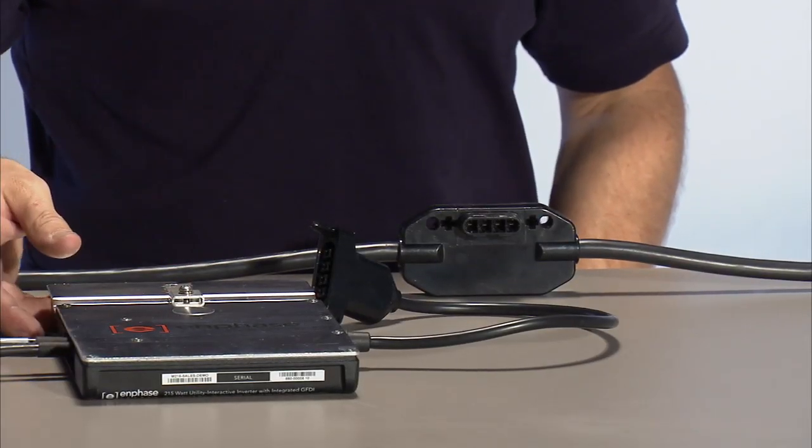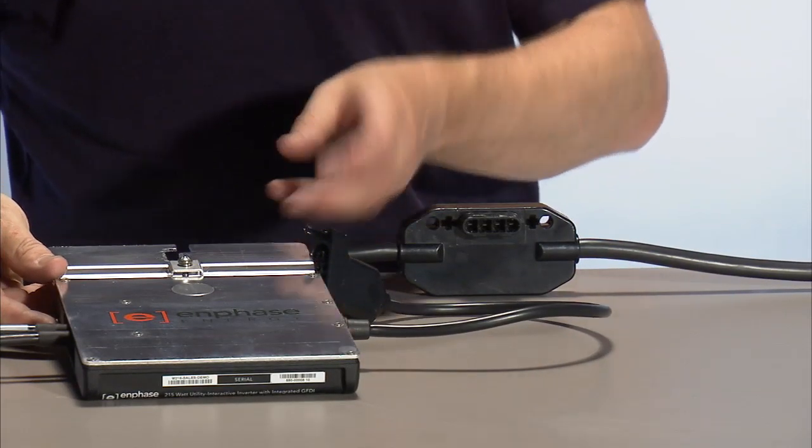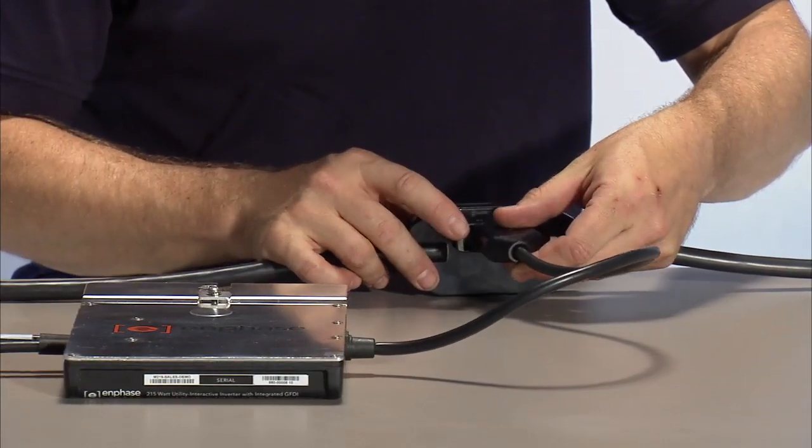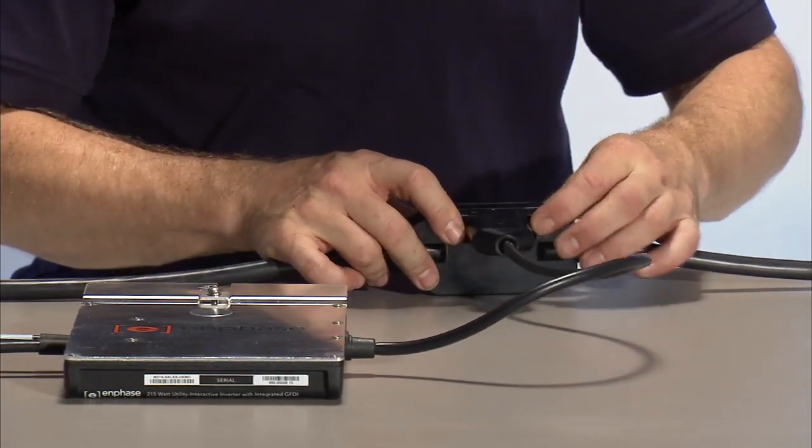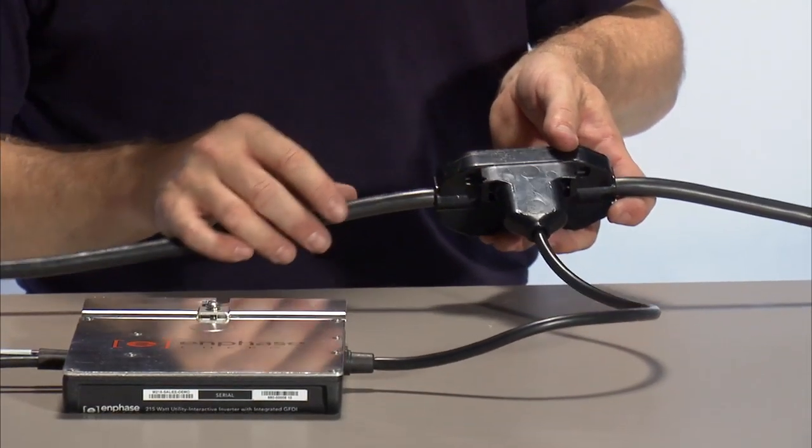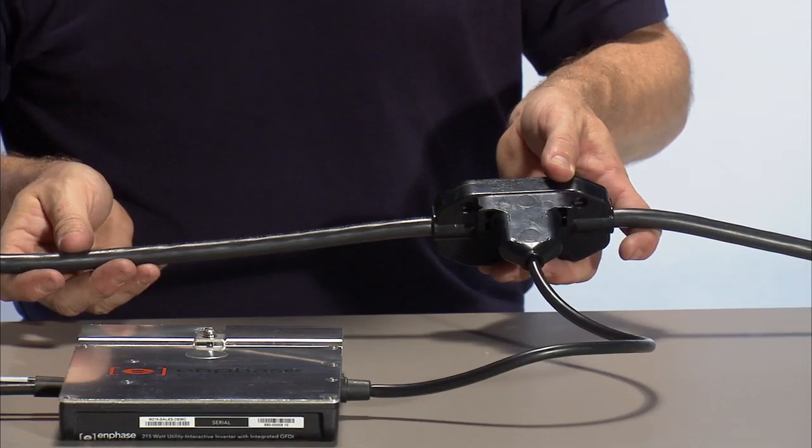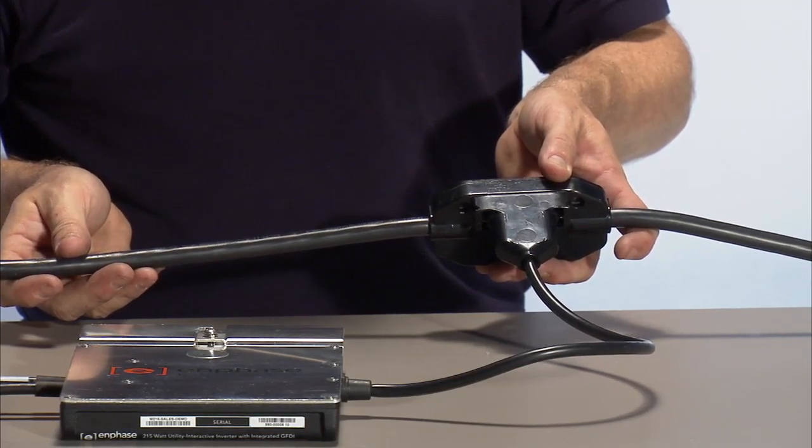The M215 microinverter is designed to attach to an external AC bus cable or trunk cable. This new external bus cabling system differs from previous generation's microinverter integrated cabling and provides increased flexibility for system design and installation.